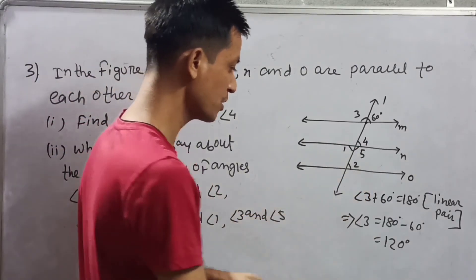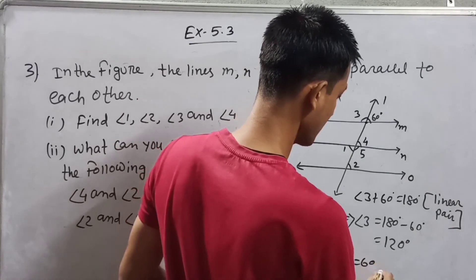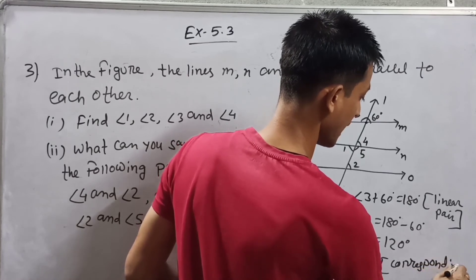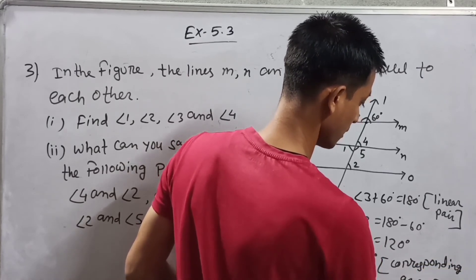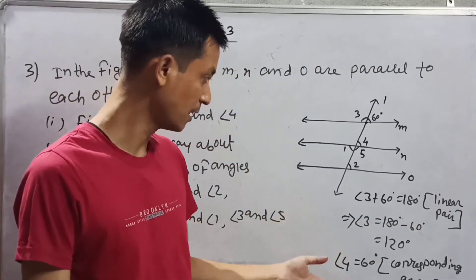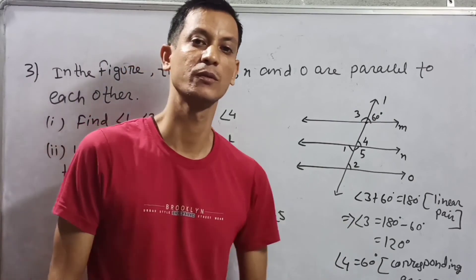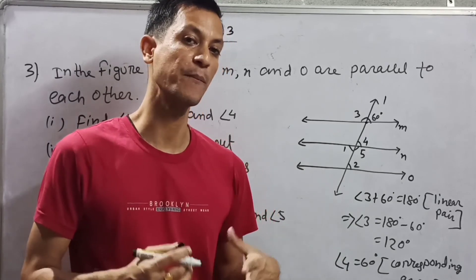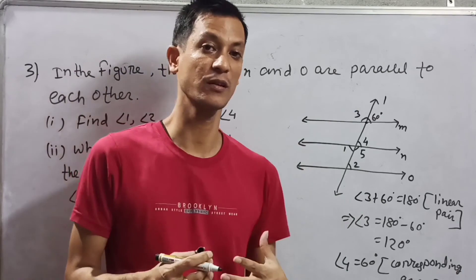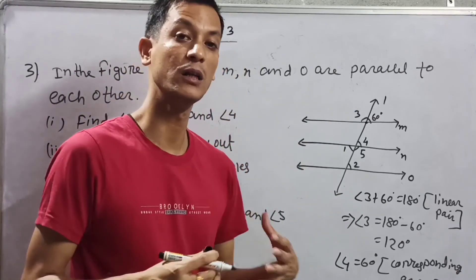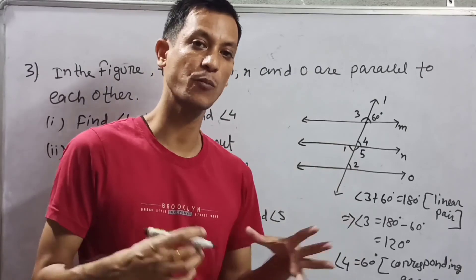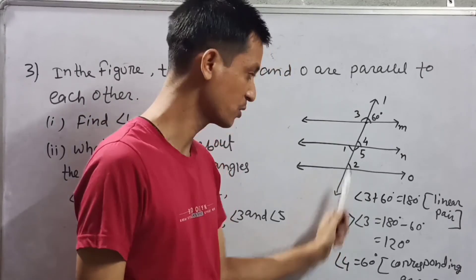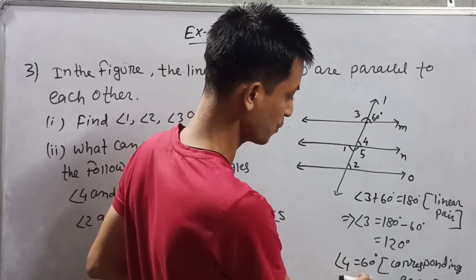Now angle 4 is equal to 60 degrees — corresponding angles. Corresponding angles are equal. If you want to know more, you can watch my video that I made specifically on transversals, where all the conditions, properties, and formulas are explained. So angle 4 is equal to 60 degrees, corresponding angle.